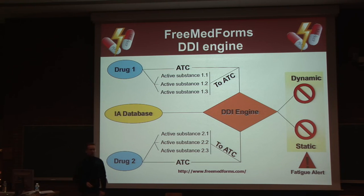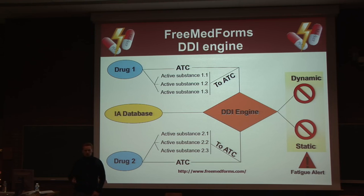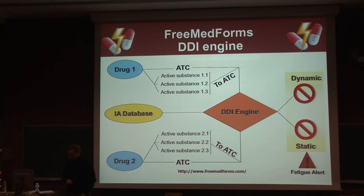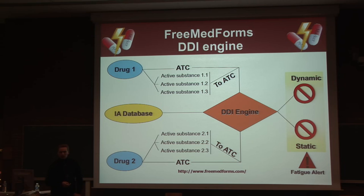How does the drug interaction engine work? This is really straightforward. The interaction engine analyzes all combinations of drugs per couple. Each active substance of drugs is linked to an internationally recognized coding system, persistent over time, called ATC — Anatomical, Therapeutical, Chemical. The ATC classification is owned and licensed by the World Health Organization. When the link is done, the drug interaction engine can calculate all interactions.